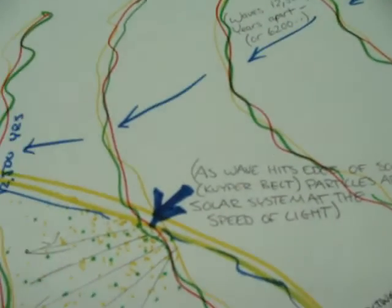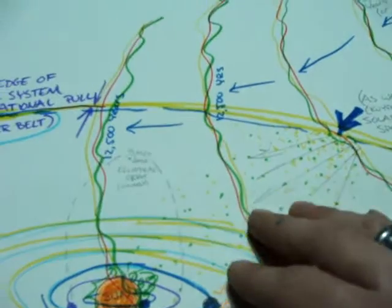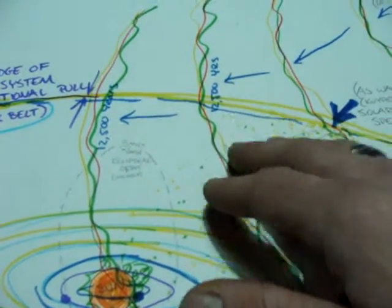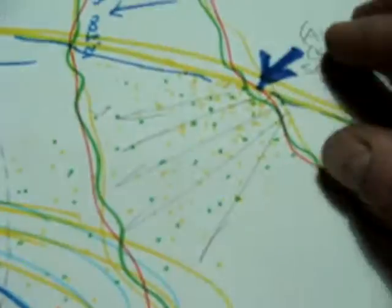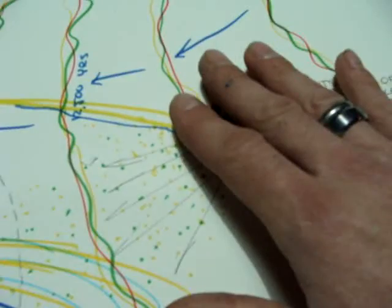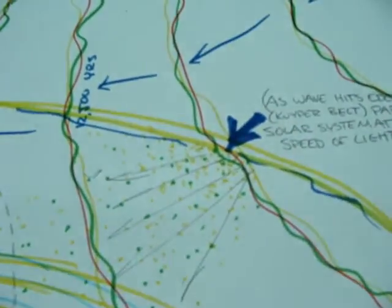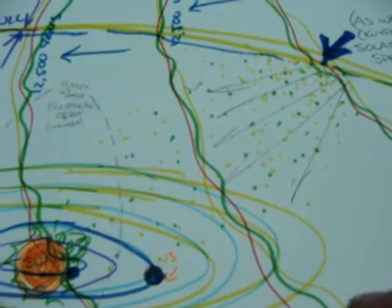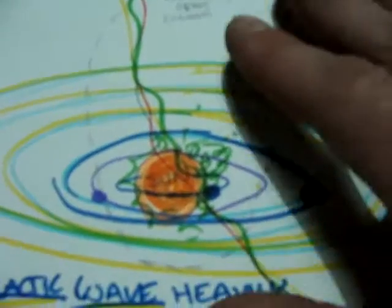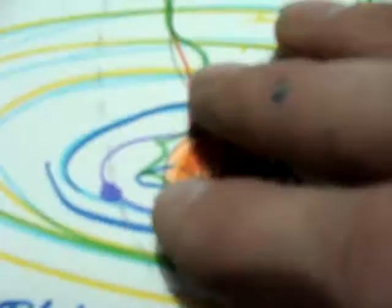As these waves travel through space, they will hit the outer solar system — the very edge, the Kuiper Belt. When they hit the Kuiper Belt, these waves are traveling at the speed of light. They'll interact with the very fine dust particles out there and shoot them at light speed into the inner solar system.